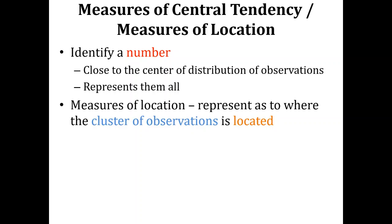This is also known as the measures of location because we have to identify the point in the spread or distribution of observations where the cluster of observations is located. We are identifying the number which can represent all observations, which is close to the center of distribution, and which is in the cluster of observations. So the purpose of these statistics is to find a number which can represent all observations and is located where the cluster of observations is.